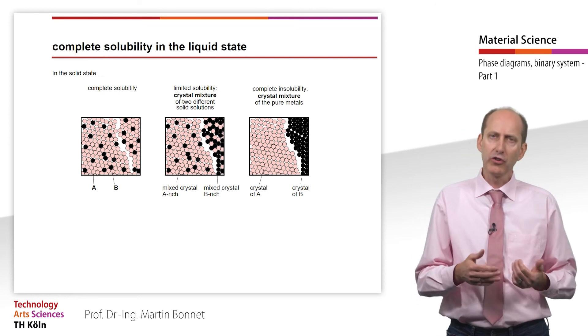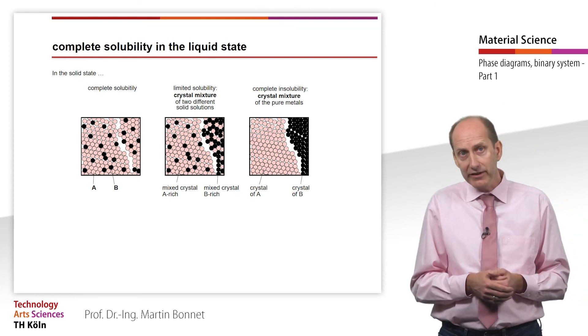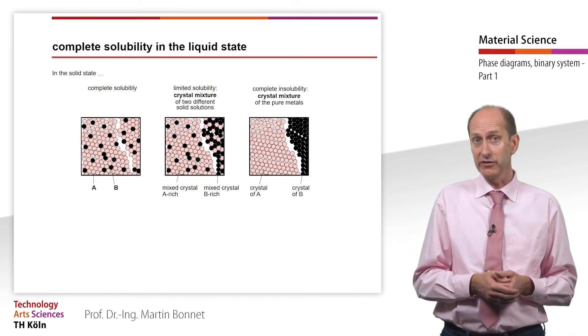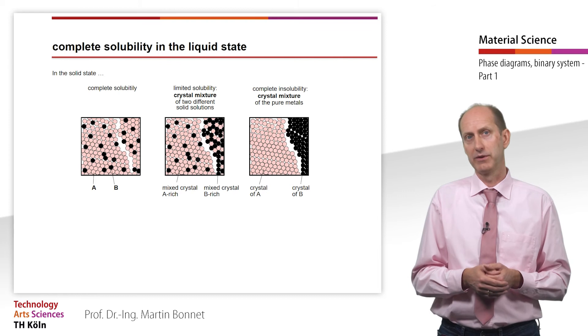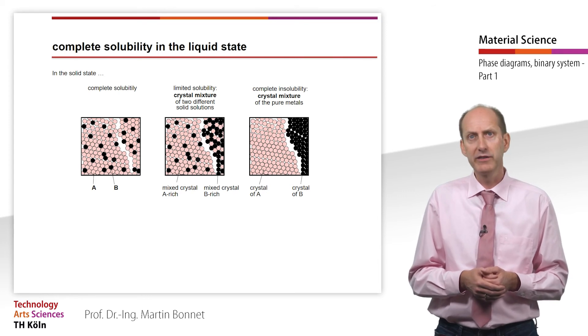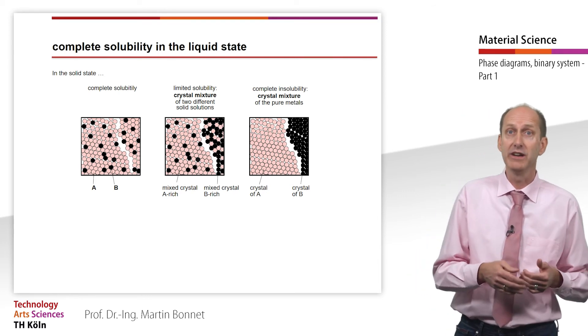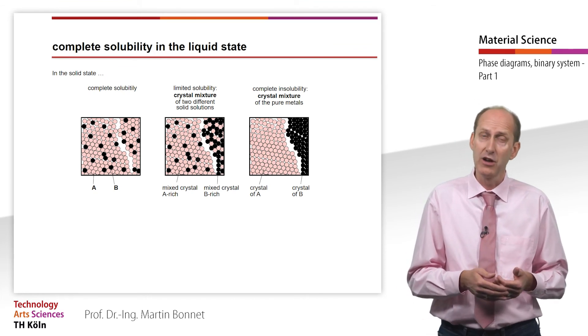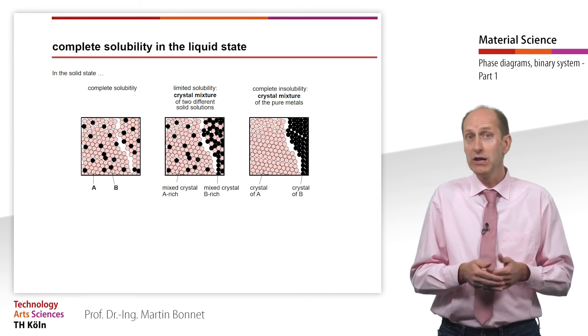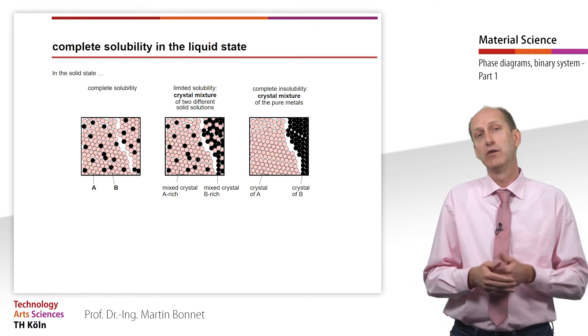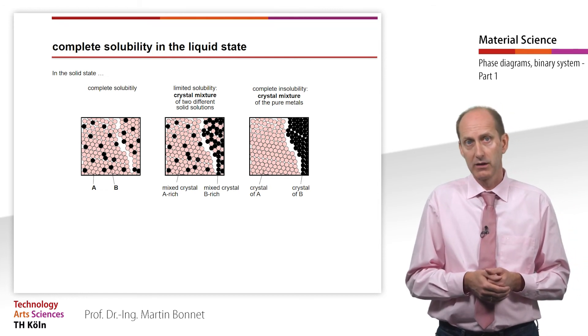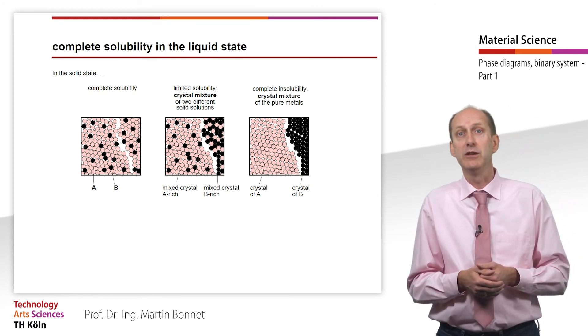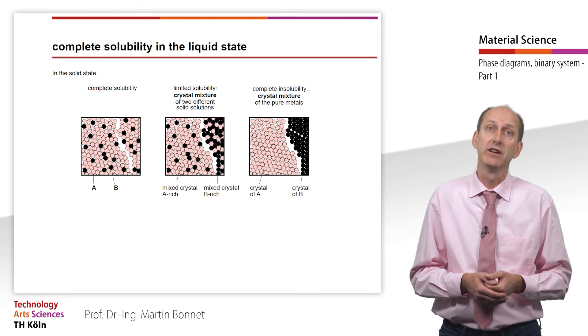When both components of a binary system are not separated in the liquid state, but completely soluble in each other, an alloy is formed. The components soluble in each other in the liquid state can either remain completely soluble in the solid state, or soluble to a limited extent, or finely dispersed. The components are contained in the alloy either in pure form or as a solid solution.